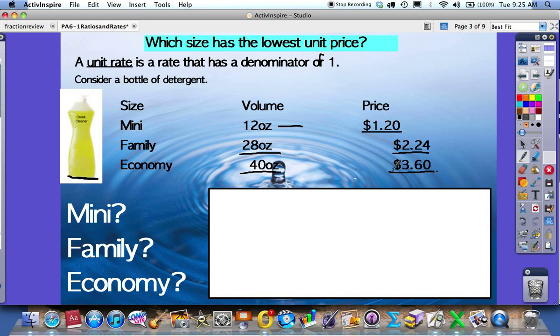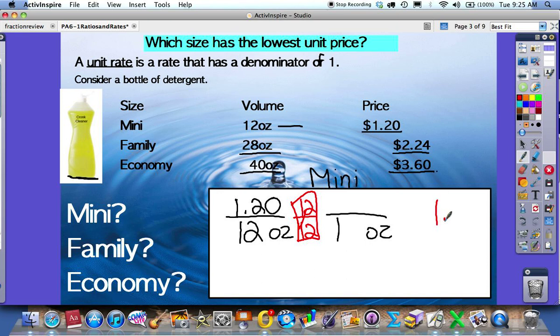Let's look at the first one. I know that I have $1.20 for 12 ounces. But I want the denominator to be for 1 ounce. I use my giant 1. To get 1 on the bottom, I have to divide this by 12. What I do to the bottom, I also have to do to the top. 1.2 divided by 12 is .1. So I know that the mini is 10 cents per ounce.